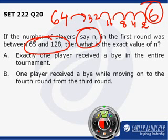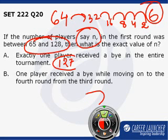Statement A says exactly one player received a bye in the entire tournament. However, statement A alone gives multiple possible answers. If we take the number of players as 127, exactly one player gets a bye in round 1. If we take the number of players as 96, we can still have exactly one bye in the tournament in round 6. So statement A alone is not sufficient as there are multiple possible answers.